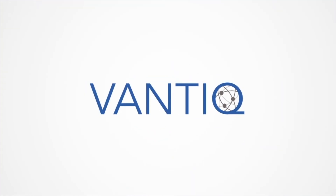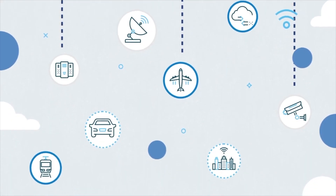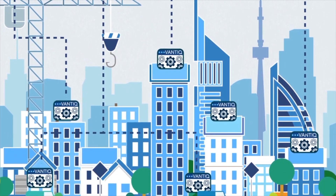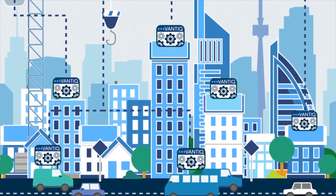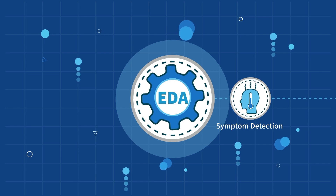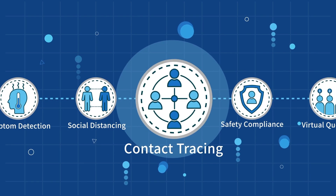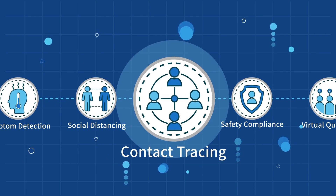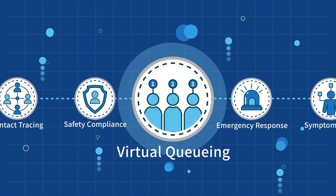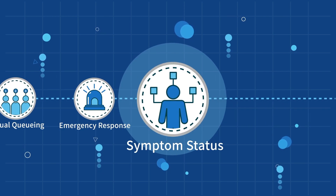Vantic is a real-time platform built on reactive, event-driven architecture that allows you to monitor and secure any business environment. Example use cases include symptom detection, social distancing, contact tracing, safety compliance, virtual queuing, emergency response, and symptom status.